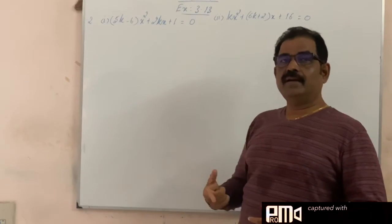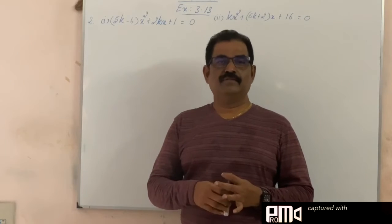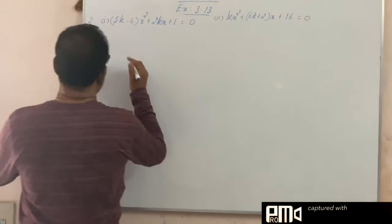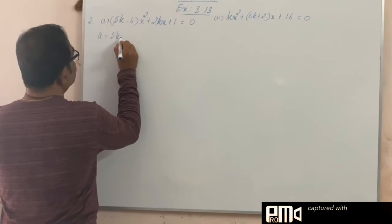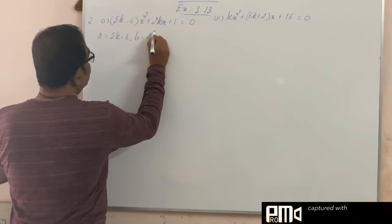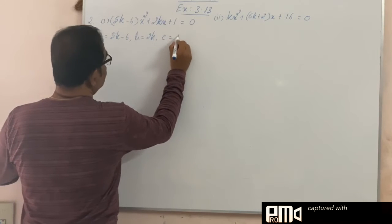So, roots are real and equal means the discriminant value delta is equal to 0. So, here I write, a is equal to 5k minus 6, b is equal to 2k, c is equal to 1.